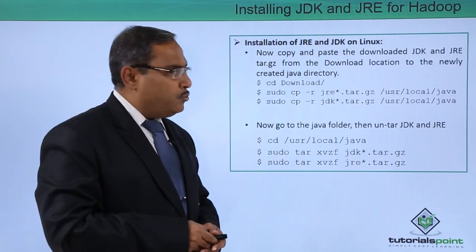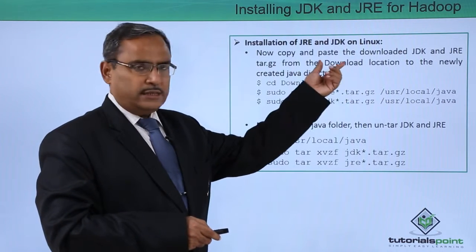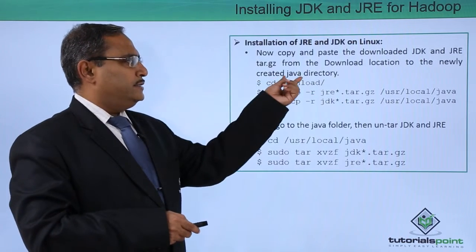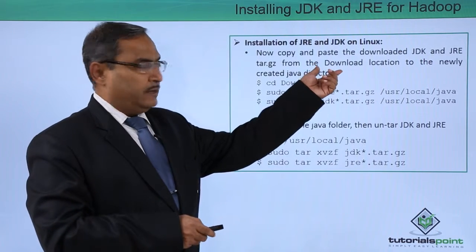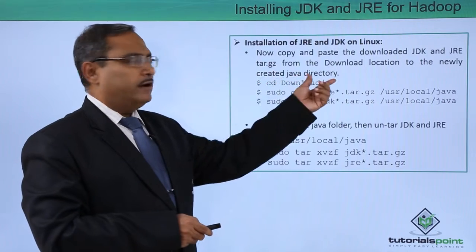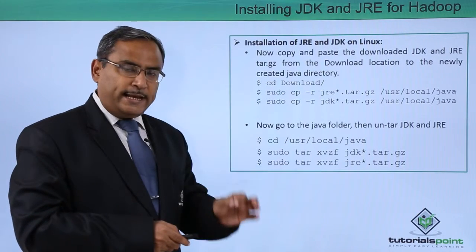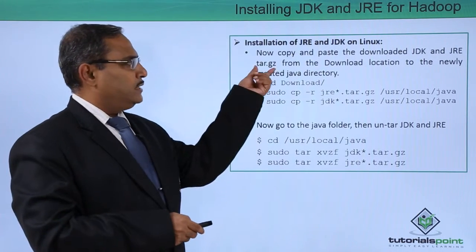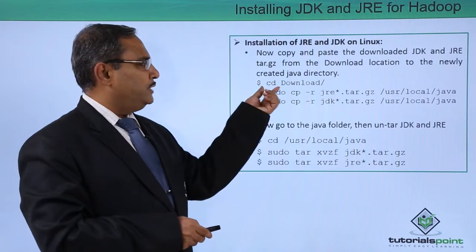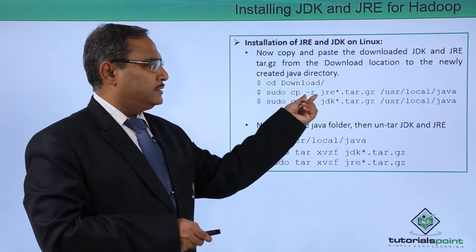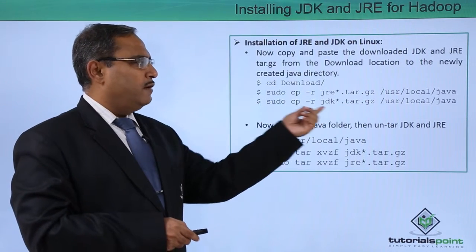Now copy and paste the downloaded JDK and JRE tar.gz files from the download location — that is the Downloads folder — to the newly created Java directory. The default folder will be Downloads, but you can also download to some other folder. Use cd Downloads, then sudo cp -r with the respective file name and the destination folder. Do this for both JDK and JRE files.